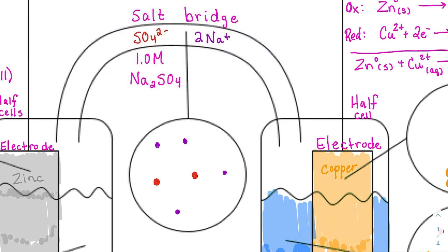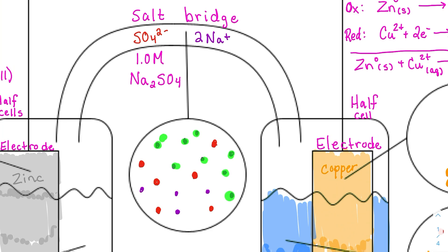For 1 molar sodium sulfate, I'll draw six sulfate ions and twelve sodium ions to accurately represent the particulate composition of the salt bridge. Note that the salt bridge is not yet inserted at this point, so the circuit is not complete.